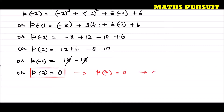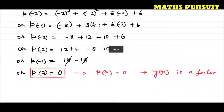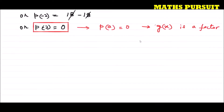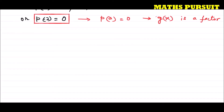Since p(−2) = 0, g(x) is a factor of p(x). Now let us test the other given polynomial, t(x). The polynomial t(x) = 2x + 4.